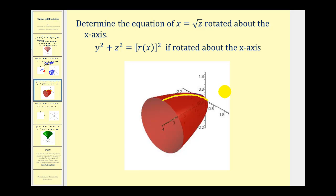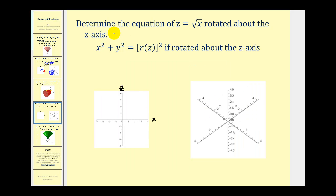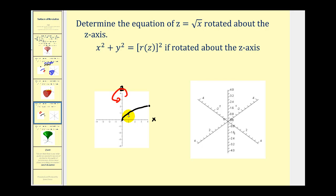Let's take a look at another example. Notice we're going to be rotating the same function, but now we're rotating it about the z-axis. Because it's about the z-axis, the radius function must be a function of z, and the other two variables x² + y² would be on the left side. We sketch the graph again, but now rotating about the z-axis, it's going to produce a different surface.